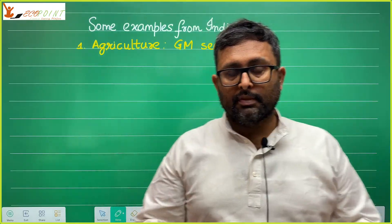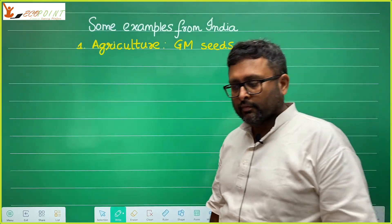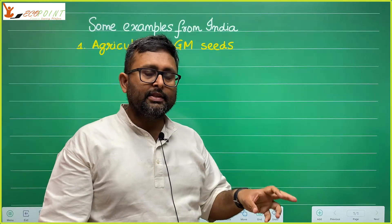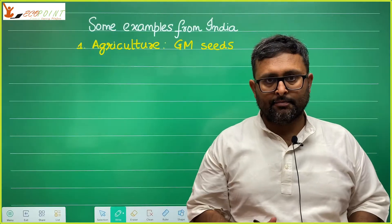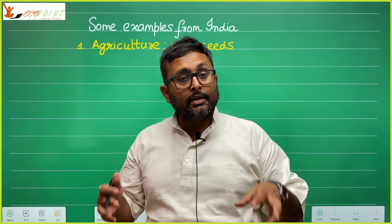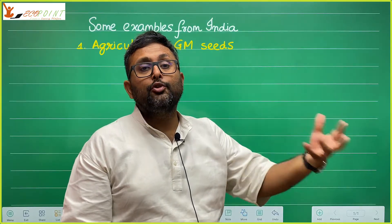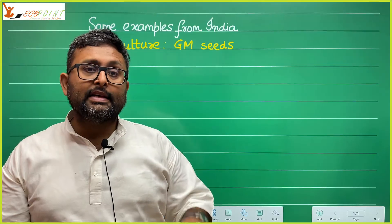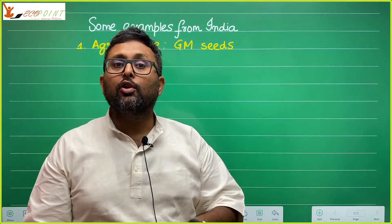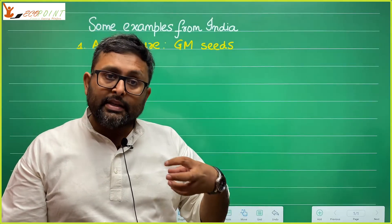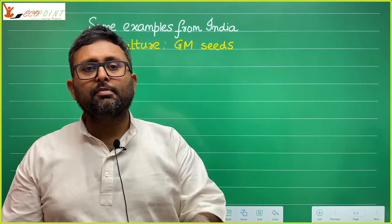A few examples from India illustrate this reasoning. In agriculture, multinational corporations push for the use of genetically modified seeds. Local distributors and local elites also promote these seeds to farmers, claiming they will produce more and earn more profit. But these seeds are expensive. Who benefits? Local elites benefit, and multinational corporations from developed nations benefit. Who does not benefit? Farmers do not benefit.